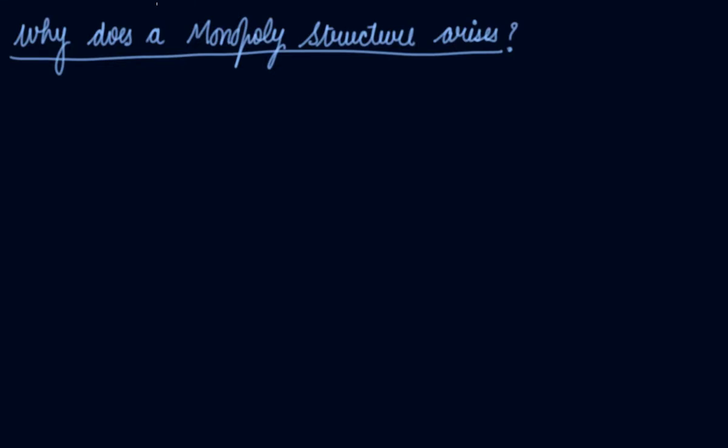In this video, we will be studying why a monopoly structure arises. There are many elements of a monopoly structure where the producer charges the price as they want and there are no substitutes. So why is this happening in the market? Why does a monopoly structure arise?